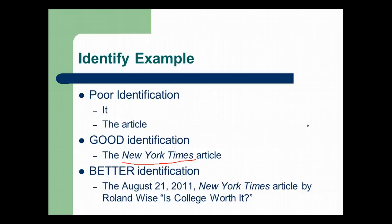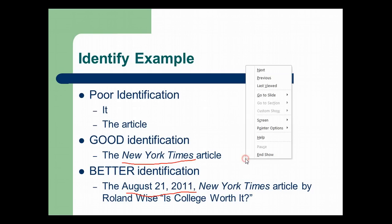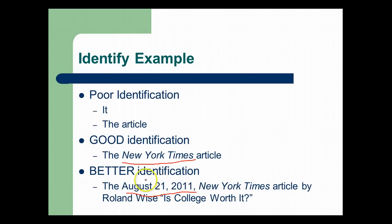But a better identification permits any reader to understand exactly what article you're talking about. For example: 'The August 21, 2011 New York Times article by Roland Wise, Is College Worth It?' This lets us know the date, the source (New York Times), the genre (article), the author's name, and the title. There's lots of information, and this is really great because then I could open up Google or even go to NYTimes.com and find this article.